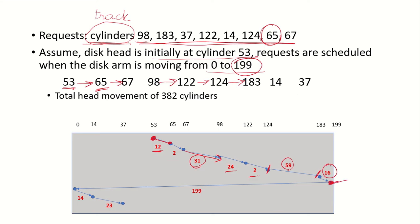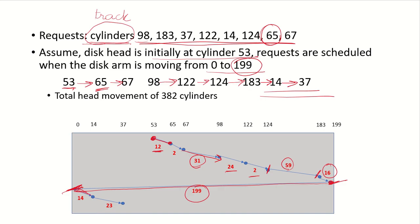Once it has reached 199, it goes back to the outermost track at 0, travelling 199 cylinders but not servicing any requests on the way back — even though there are requests for 14 and 37, those are not serviced on the return. Once back at 0, it starts moving again from 0 to 199, and on its way, 14 will come first — 14 cylinders — then 37, which is 23 more cylinders.